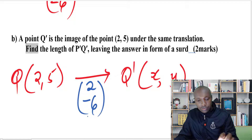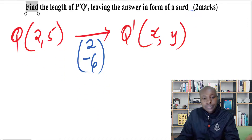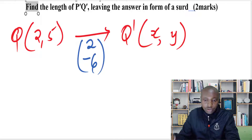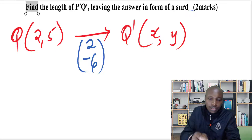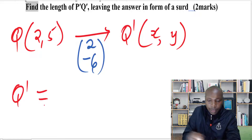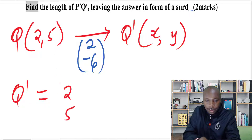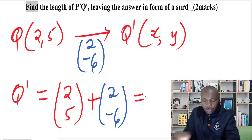Having the translation vector, as I mentioned, when you're given a point and the translation vector, to get the image we take the coordinate in column form of the object point and add the translation vector. So Q' will be given by taking Q in column form, which is (2, 5), and adding the translation vector (2, -6). This gives Q' = (4, -1).